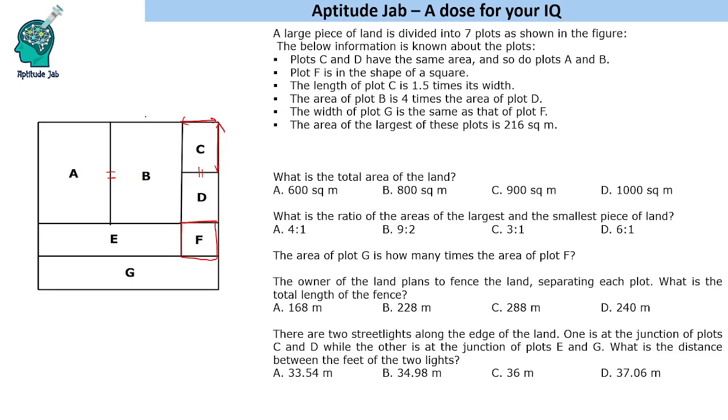First of all, we are given that this is x, so this is 1.5x. Better we can take 2 and 3 for simpler calculations. So, 2x and 3x. Now, F is 2x by 2x. Now, if you see C and D, they have same width like 2 here till here. So, it is going to be 2x and 3x. Let us write the areas also. F is 4x square. This is 6x square. This is also 6x square.